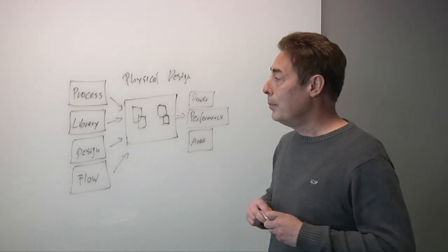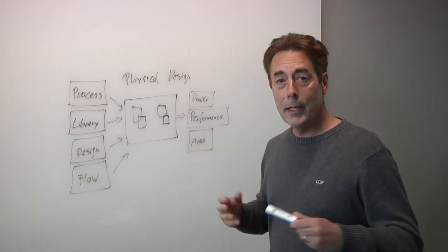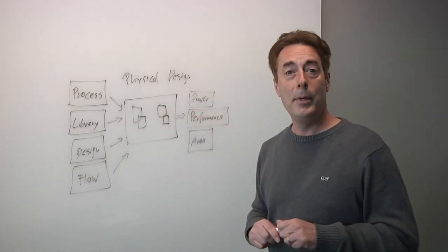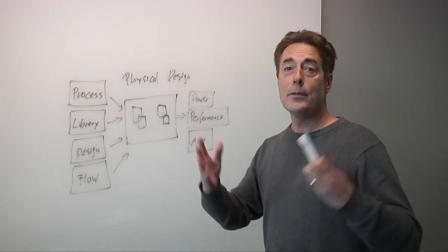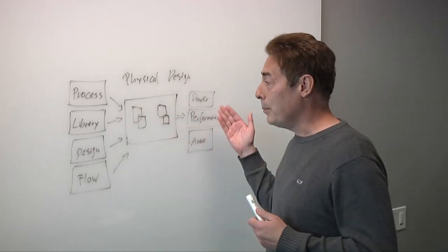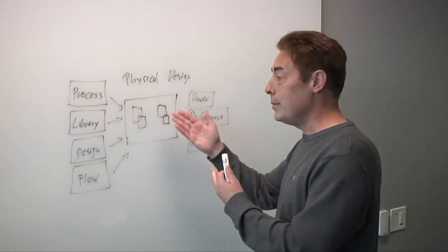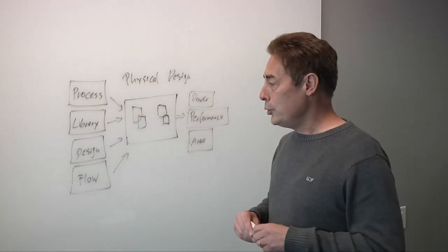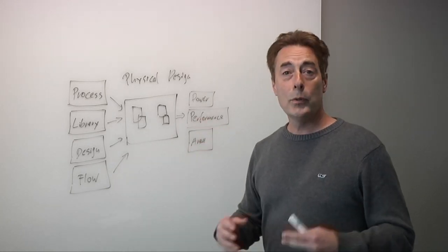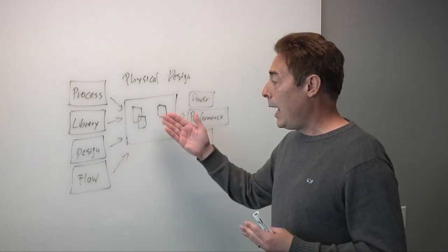Things like, for example, process choices, things like metal stack, metal thickness, and things that have impact on my PPA. Similarly, library choices. You can have libraries with thousands of cells that might be good for power, that might be good for timing. Which library cell do I choose for which type of application? Then I have lots of design choices to make, and of course, also flow choices in terms of how do I position my steps in my implementation flow.